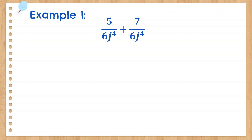Let's have example number one. We have 5 over 6J to the 4th power plus 7 all over 6J to the 4th power. The denominators are the same, so we follow the steps. Step number one is to add the numerators. Since we have an addition symbol, we're going to add the numerators: 5 and 7, then keep the denominator the same — 6J to the 4th power.